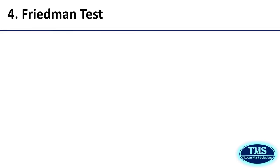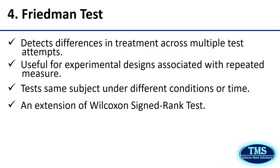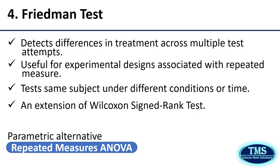Fourth, the Friedman test. The Friedman test is a non-parametric statistical test that can be used to detect differences in treatments across multiple test attempts. It is particularly useful for experimental designs involving repeated measures, such as testing the same subject under different conditions or over different time points, where the assumptions of parametric tests are not met. It is an extension of the Wilcoxon Signed-Rank test to more than two related groups. The parametric alternative is repeated measures ANOVA. Performing a Friedman test is to be considered if and only if the parametric assumptions of repeated measures ANOVA are not satisfied or are violated by your data.